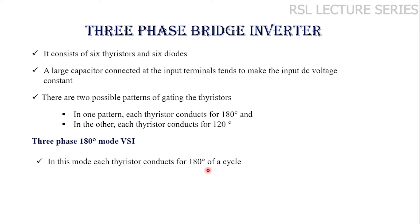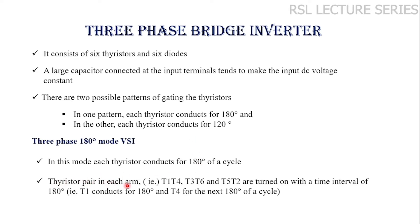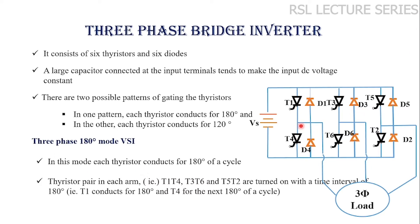In this mode each thyristor conducts for 180 degrees. The thyristor pairs in each arm are T1-T4, T3-T6, and T5-T2. Thyristors connected to the same arm form a pair. These thyristor pairs are turned on with a time interval of 180 degrees. T1 conducts for 180 degrees, then once T1 is turned off T4 will start conducting for another 180 degrees. T1 and T4 conduct alternately, similarly T3 and T6, and finally T5 and T2. These thyristor pairs will be conducting alternately in a cycle.